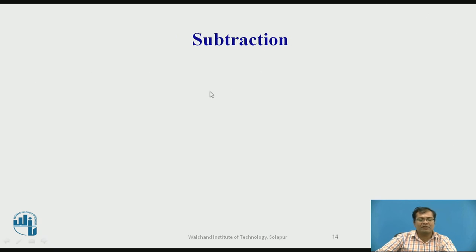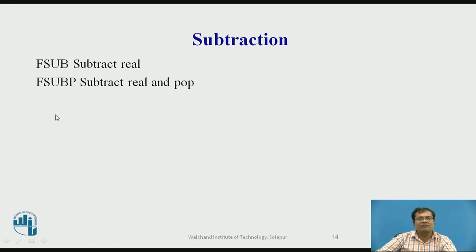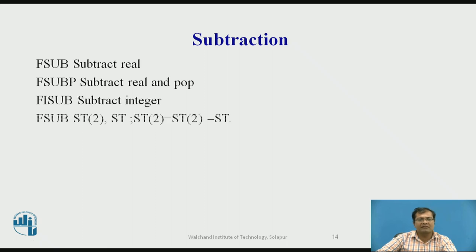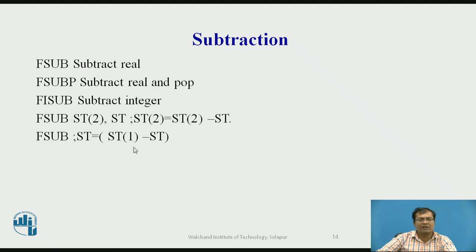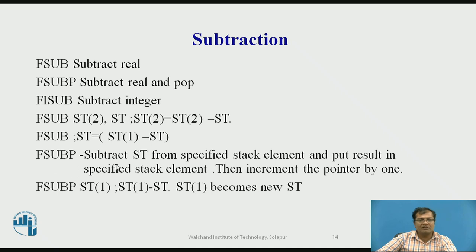The next type of arithmetic instruction is subtraction: FSUB — subtract real; FSUBP — subtract real and pop. For example, FSUB ST(2), ST performs ST(2) = ST(2) minus ST. FSUBP subtracts ST from a specified stack element, stores the result in that element, then decrements the pointer by 1. FSUBP ST(1) computes ST(1) minus ST, and ST(1) becomes the new ST.